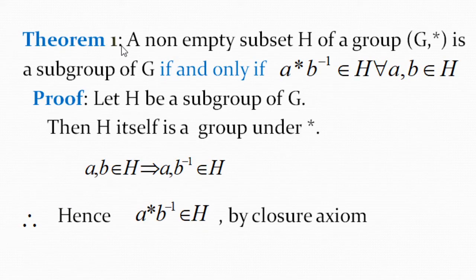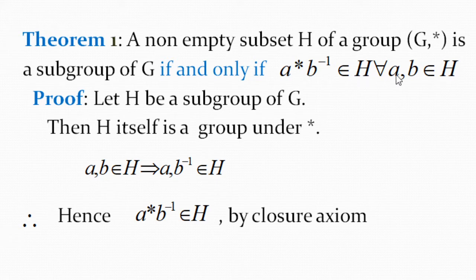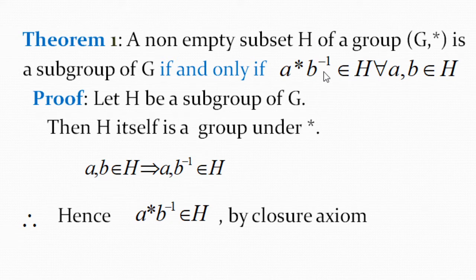Now we will see Theorem 1. A non-empty subset H of a group G under binary operation star is a subgroup of G if and only if A * B⁻¹ belongs to H for all A, B belonging to H. Note the 'if and only if' — so there are two parts. First part: H is a subgroup of G. Second part: A * B⁻¹ belongs to H. Assuming the first part we prove the second, then assuming the second we prove H is a subgroup of G.